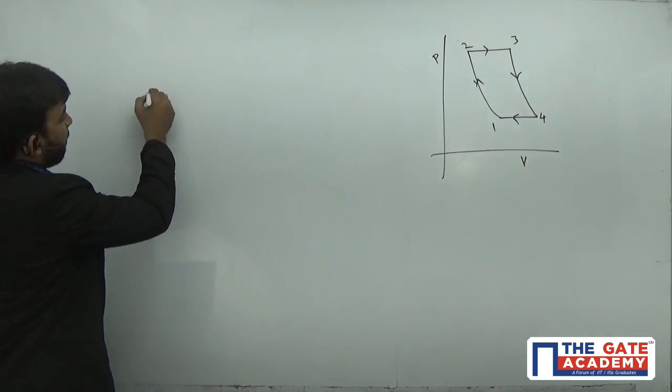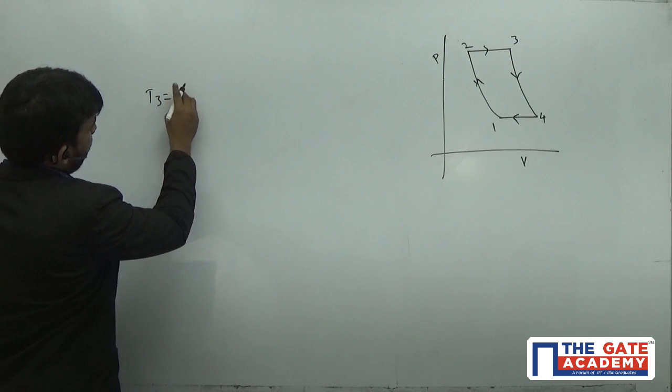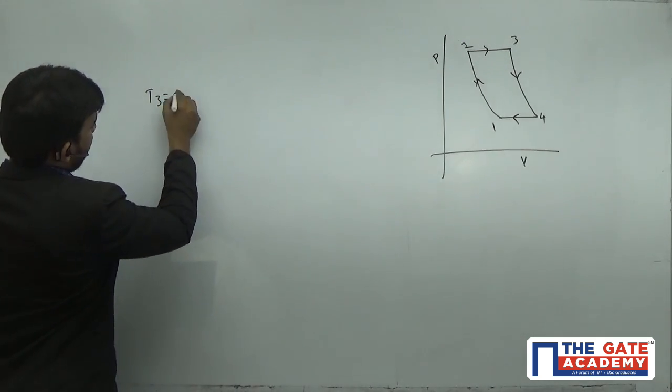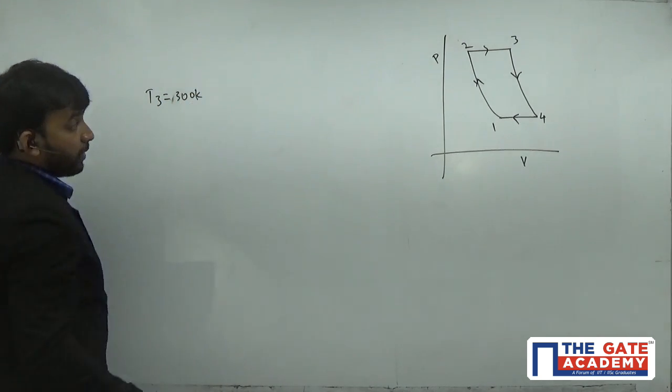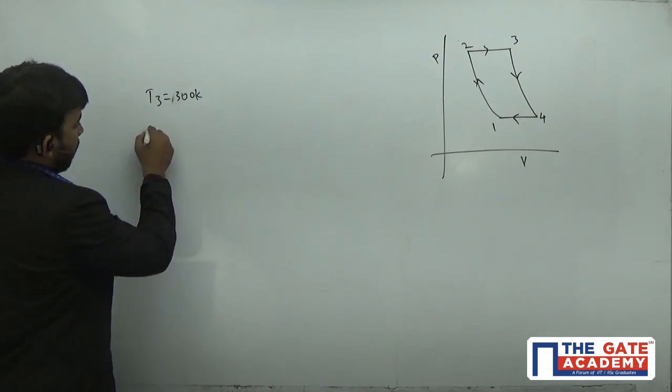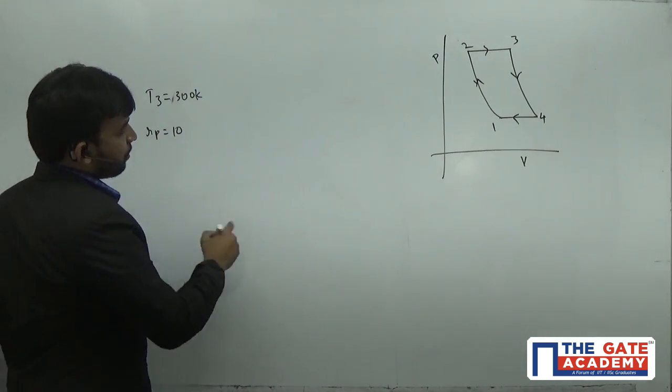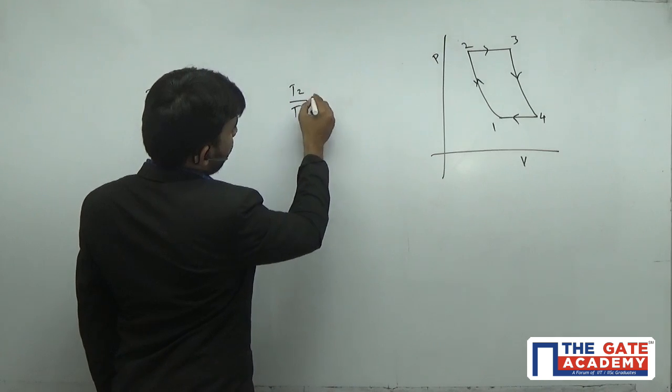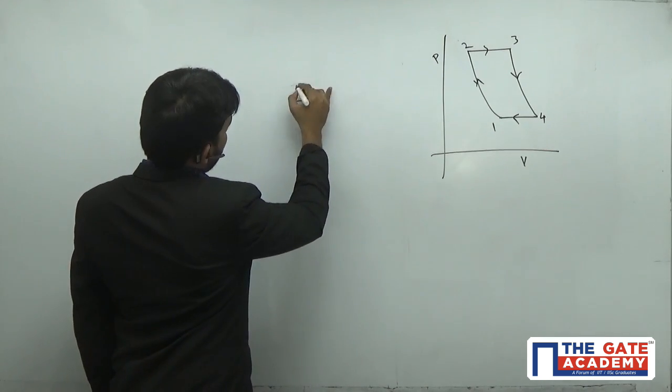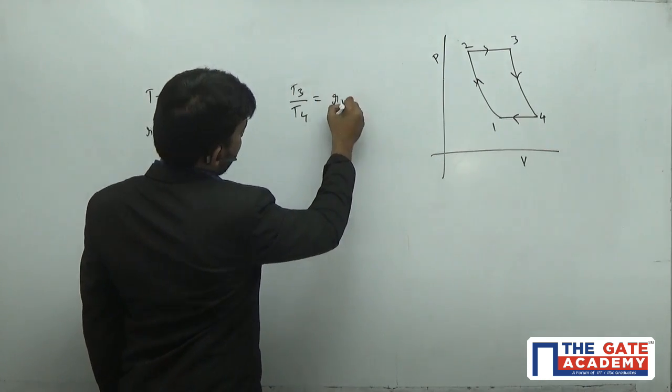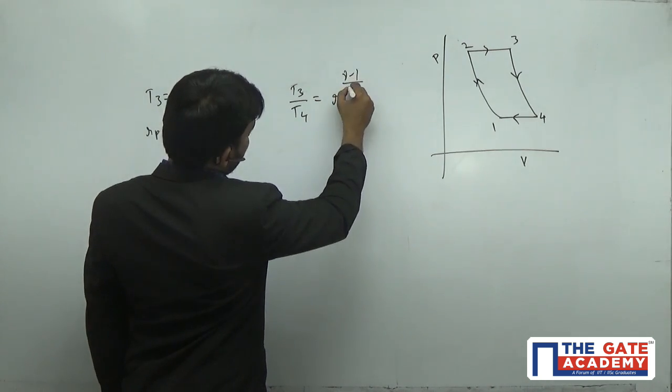He is saying that temperature at state 3 is given as 300 Kelvin. Temperature at state 3, the inlet of the turbine, is given as 300 Kelvin. He gives the pressure ratio, pressure ratio is 10. So I can write T3 by T4 is Rp power gamma minus 1 by gamma.